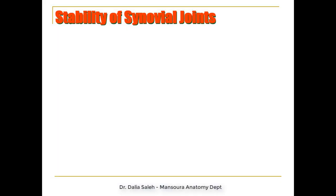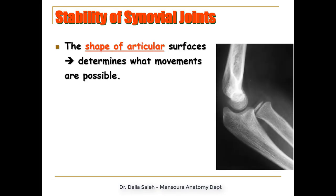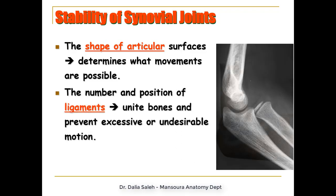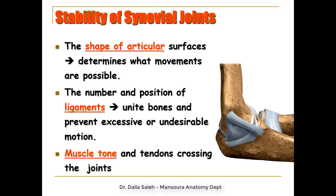Joint stability is determined by three factors. The first is the shape of the articular surfaces, which determines what movements are possible — the more movable the joint, the less stable it is. The second factor is the number and position of ligaments around or within the joint; these unite the bones and prevent excessive or undesirable movements, so more ligaments means greater stability. The third factor is muscle tone and the muscles and tendons crossing the joint.